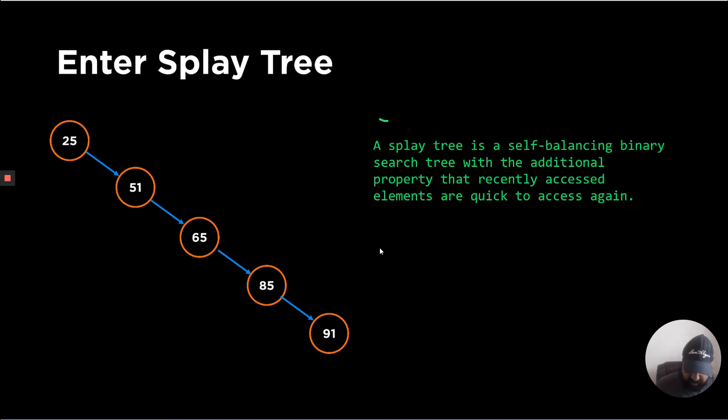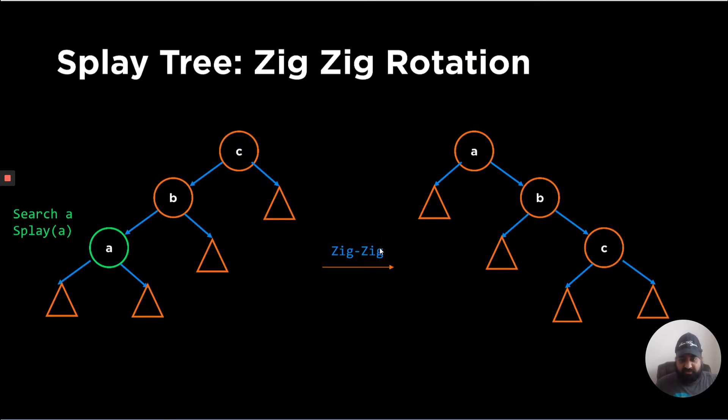So a splay tree is a self-balancing BST. It's a BST with the additional property that recently accessed elements are quick to access again, which is whatever we access becomes the first element somehow magically. So to achieve this, there are three different types of rotations. You are not supposed to learn these rotations for the sake of exam. We are just going to ask you what are the different properties and what will happen if rotations were occurring and where is this tree used.